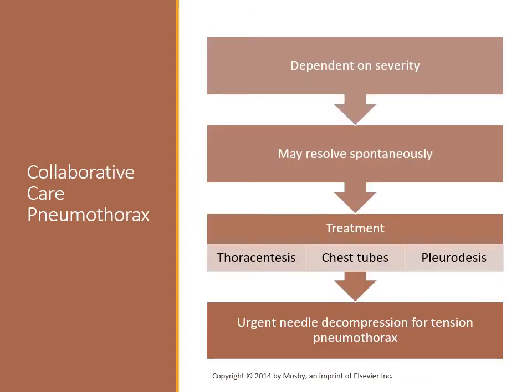Treatment for a pneumothorax depends on its severity and the nature of the underlying disease. If the patient is stable and the amount of air and fluid accumulated in the interpleural space is minimal, no treatment may be necessary as the condition may resolve spontaneously. The pleural space can also be aspirated with a large-bore needle; this procedure is known as a thoracentesis. The most common form of treatment of a pneumothorax and hemothorax is insertion of a chest tube connected to water-sealed drainage. Repeated spontaneous pneumothorax may need to be treated surgically by partial pleurectomy, stapling, or pleurodesis. Tension pneumothorax is a medical emergency requiring urgent needle decompression followed by chest tube insertion to water-sealed drainage.